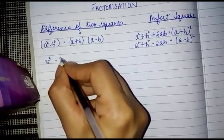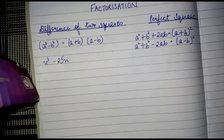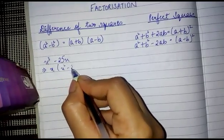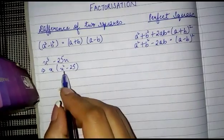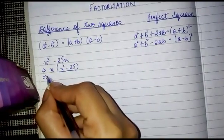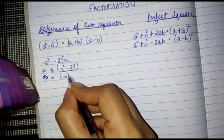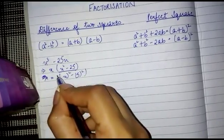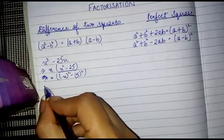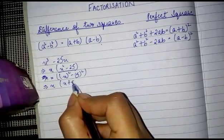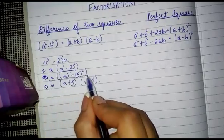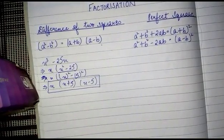Suppose there is an equation x³ minus 25x. In order to factorize this, let's take x as the common variable. Here we get x(x² minus 25). If we see this carefully, x² minus 25 is the difference of two squares, which can be written as x² minus 5². So it is basically in the form of a² minus b². Using this expression, we write it as x(x + 5)(x - 5). This is how we factorize an equation in the form of difference of two squares.